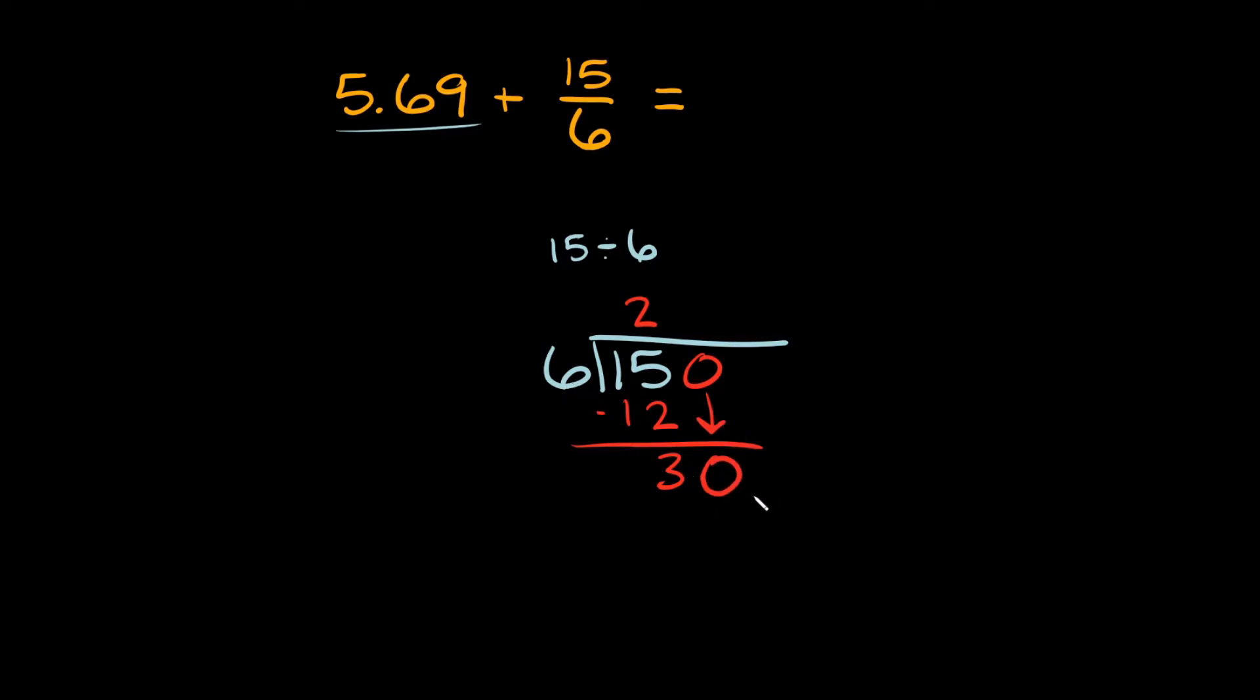Now, 6 goes into 30 how many times? 5 times, right? And then 5 times 6 is 30, so you subtract right there, and then 30 minus 30 is just 0, so we have no remainder.